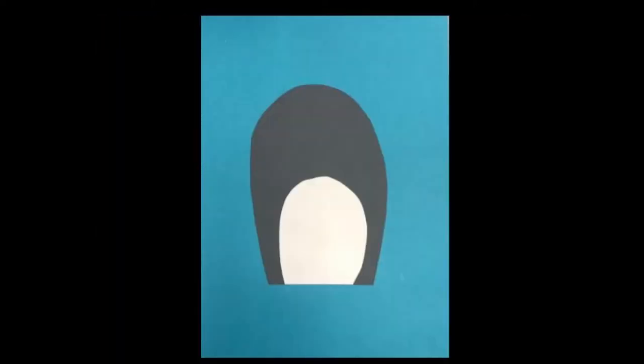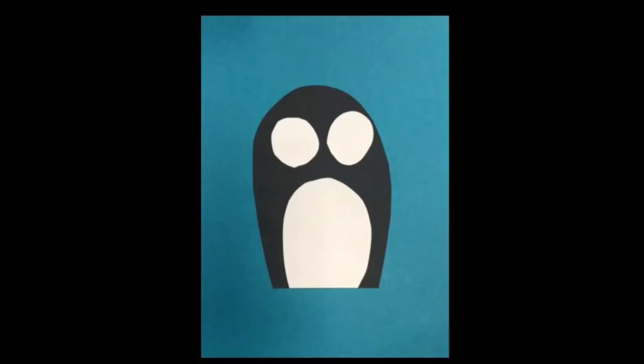Once you are done cutting you can start piecing your pieces together. We started with the body and glued it down to our background paper first. Then placed the white belly on top. Next we added the eyes followed by the beak and the feet.